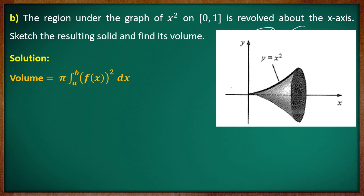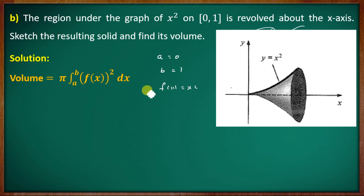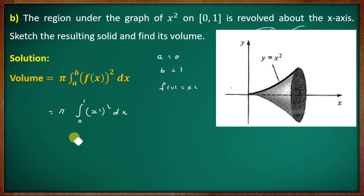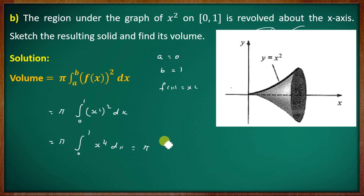Volume V = π∫ₐᵇ [f(x)]² dx. With a = 0, b = 1, and f(x) = x²: V = π∫₀¹ (x²)² dx = π∫₀¹ x⁴ dx = π[x⁵/5] from 0 to 1.